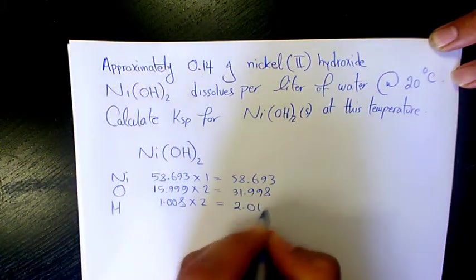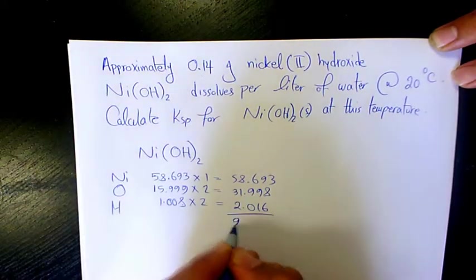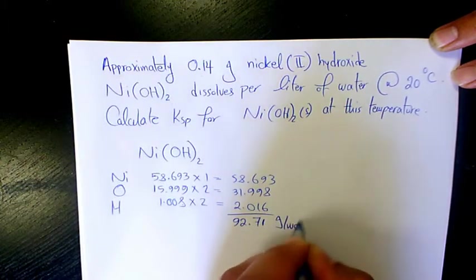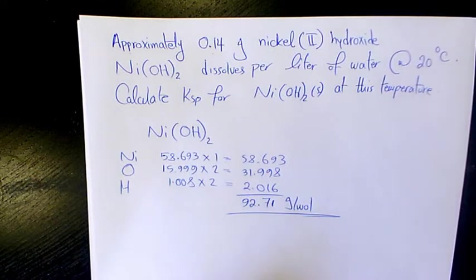It gives us approximately 92.71 grams per mole. So that's the molar mass of nickel hydroxide. Now what we need to do is convert the number of grams to moles.